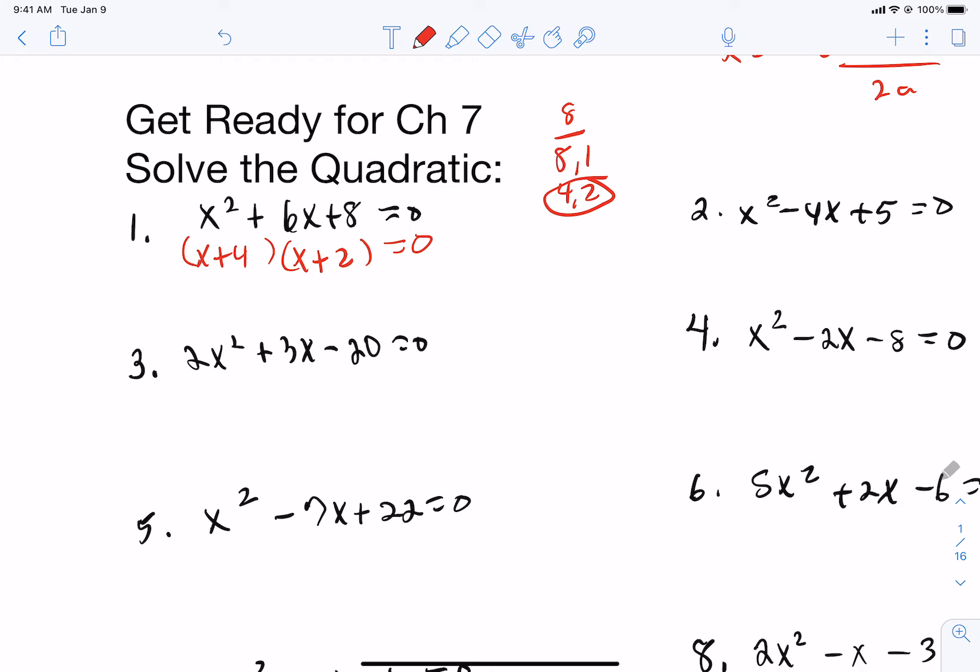So we know we factored it right. Now, from there, remember, to keep going, we're going to set each piece individually equal to 0 and solve. Well, the x plus 4 piece, when it's set equal to 0, gives us negative 4. When the x plus 2 piece is set equal to 0, when we subtract 2 from both sides, we get negative 2. So you have two solutions here, negative 4 and negative 2. So that's how you would solve it using factorization. Now, if you're not particularly good at factoring, feel free to go another route. So you can always jump back to the quadratic formula. But, of course, you have to apply it right.